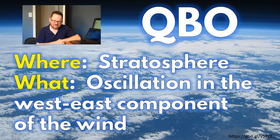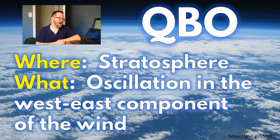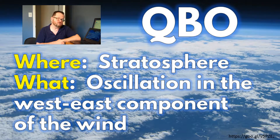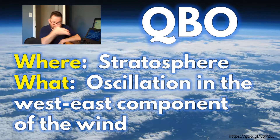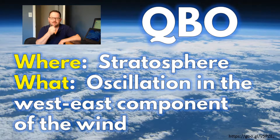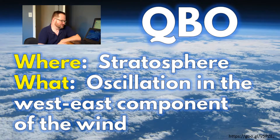If I had to come up with a set of words to quickly describe the QBO as we look at some figures, I'd say the QBO is an oscillation in the east-west component of the wind in the stratosphere. Wind is a vector, and we can divide it up into the east-west component and the north-south component. As it happens, the east-west component of the wind has an oscillation to it, and I can show you some examples of that.